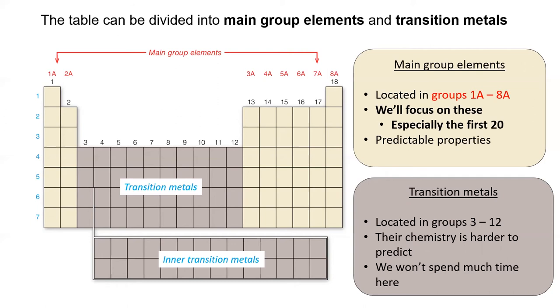Note that there are two ways to number the columns of the table. I will be primarily using the numbers in red since they also correspond to how many valence electrons elements in that column have.